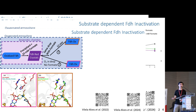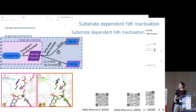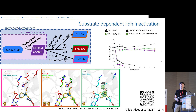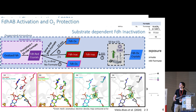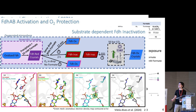We were left wondering if this would just happen with formate or if it would happen also with the other substrate, which is CO2. So we went to the SRF and incubated the oxidized crystals with CO2. Curiously, we also obtained the same inactive form, which proves that the tungsten redox state doesn't matter very much to the obtention of the inactive state.